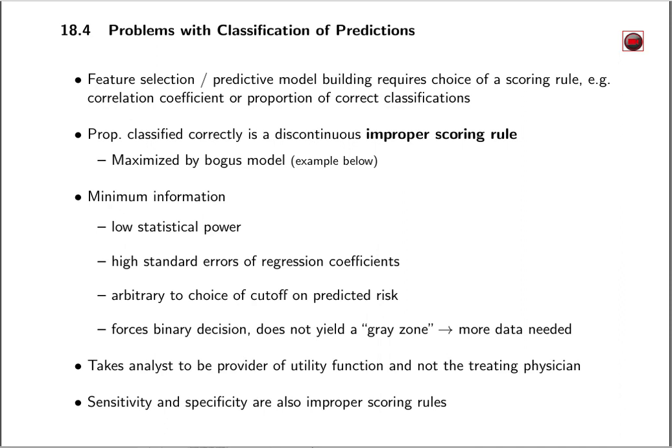It's very important that one choose what's called in statistics a proper accuracy scoring rule. A proper accuracy scoring rule is one that is optimized when the model that optimizes it is a reasonable model that's likely to be a true model in a certain sense. An improper scoring rule is an accuracy score that is optimized by a bogus model, and we'll see an example of that in a couple of minutes.